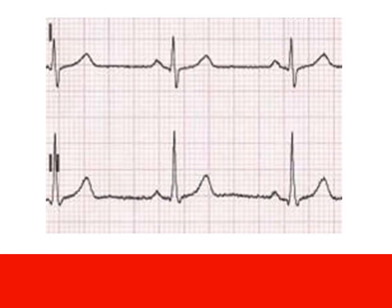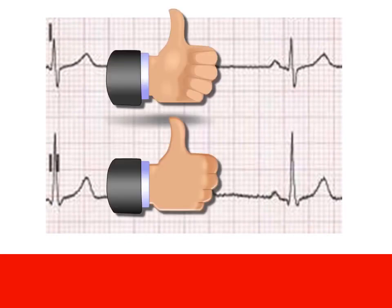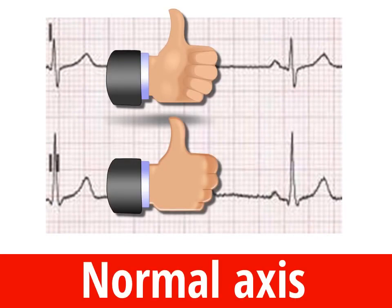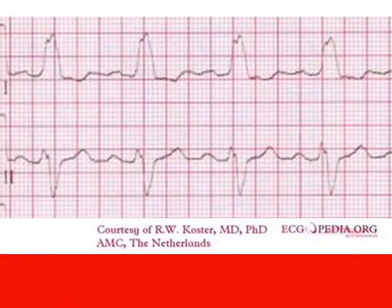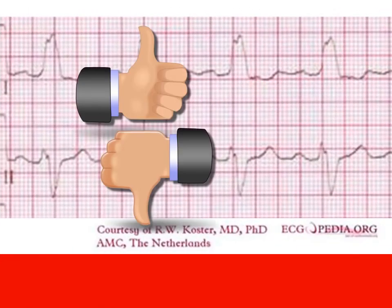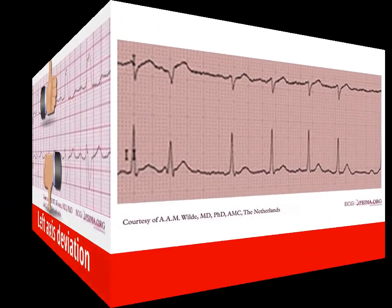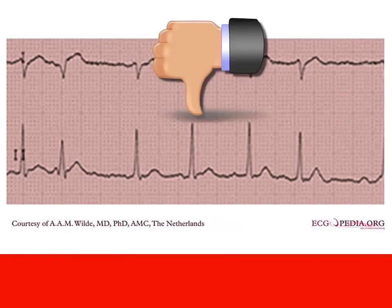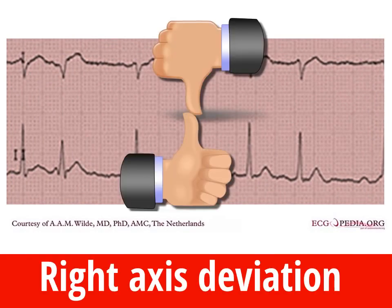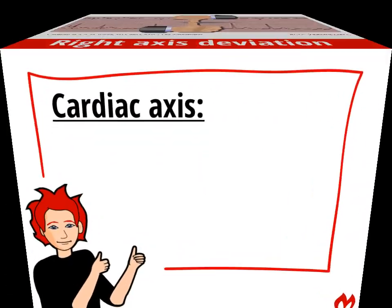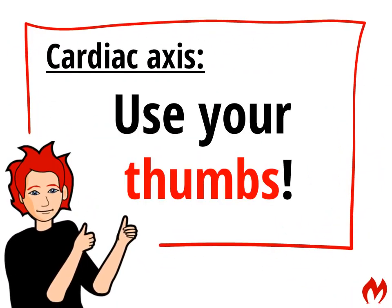Let's try that again. In this ECG, there's 2 thumbs up so the axis is normal. In this ECG, thumbs have left each other so it's left axis deviation. And finally, in this ECG, thumbs are headed right for each other so it's right axis deviation.